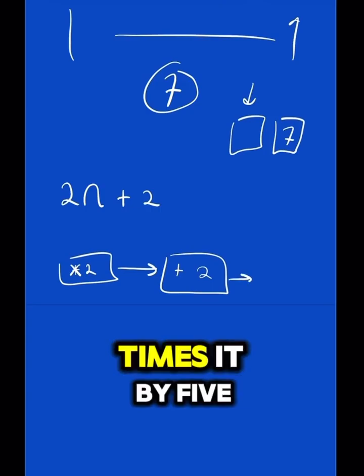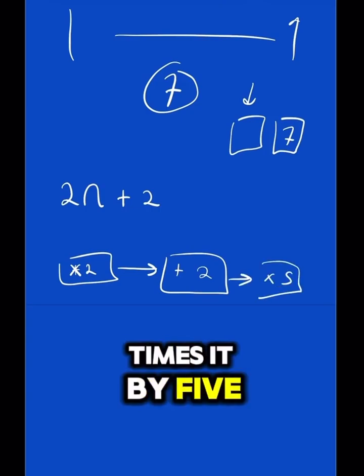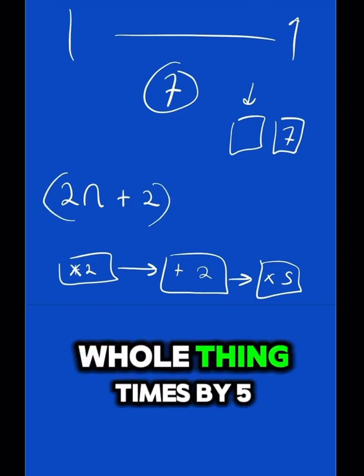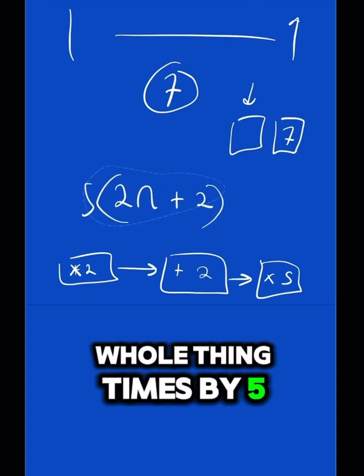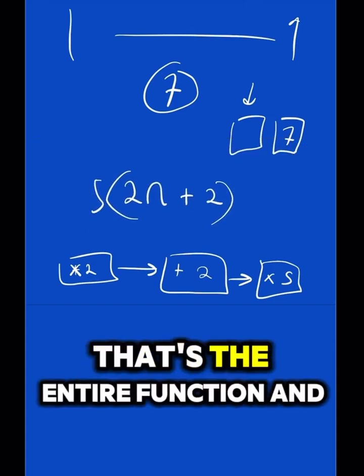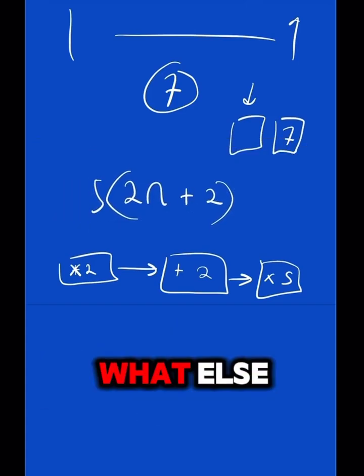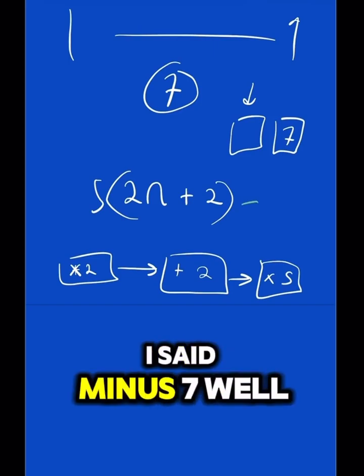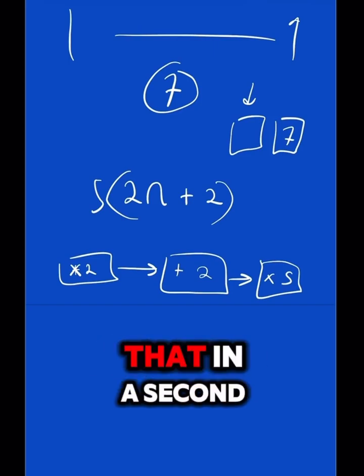Then I said times it by 5, which would be the whole thing times by 5, which would look like this. That's the entire function. What else did I say to do? Well, I said minus 7. We'll come back to that in a second.